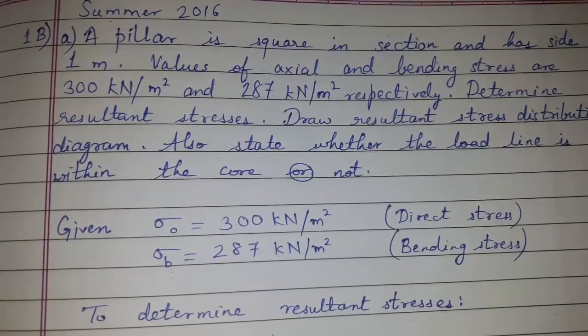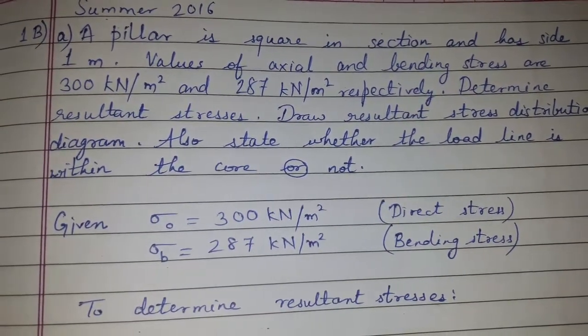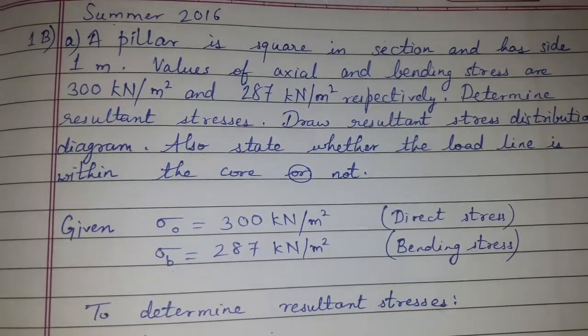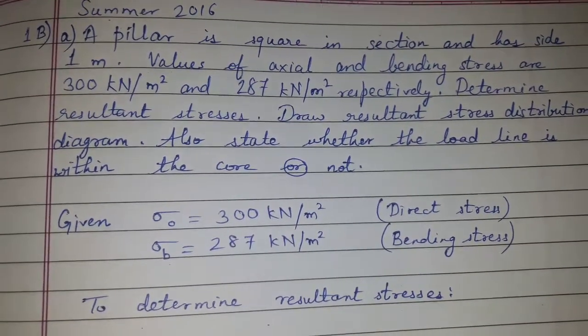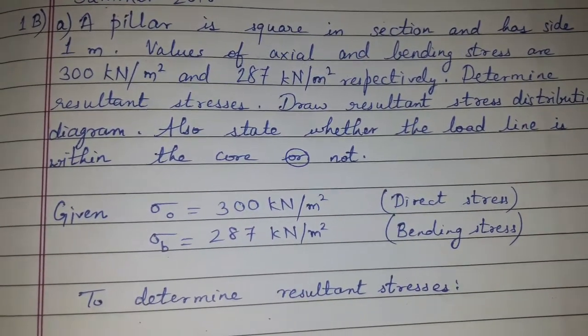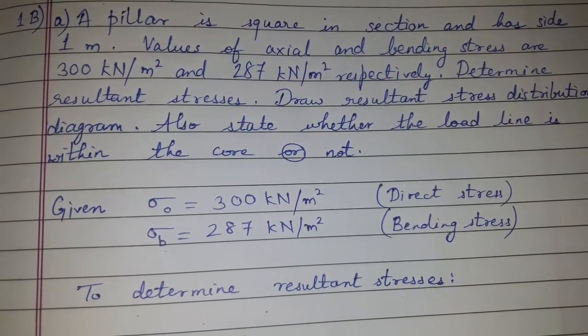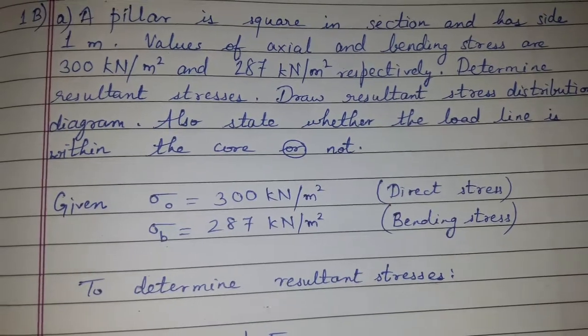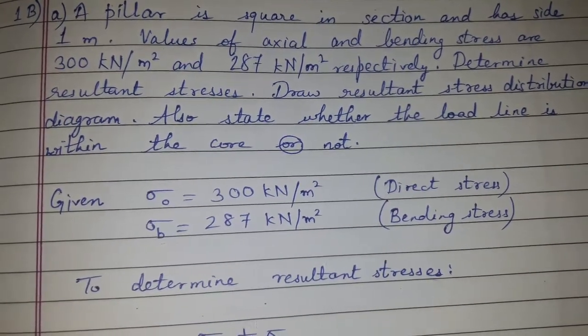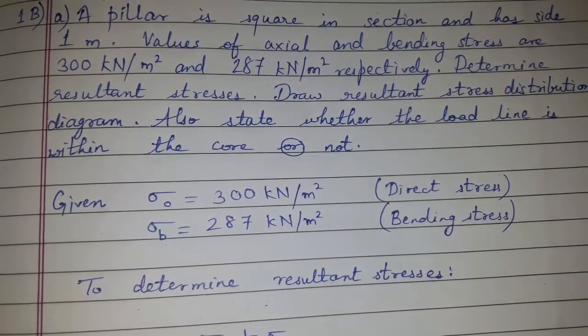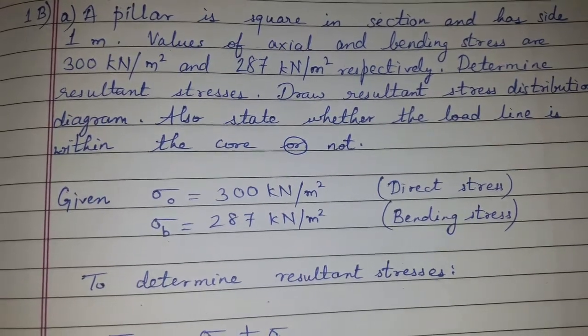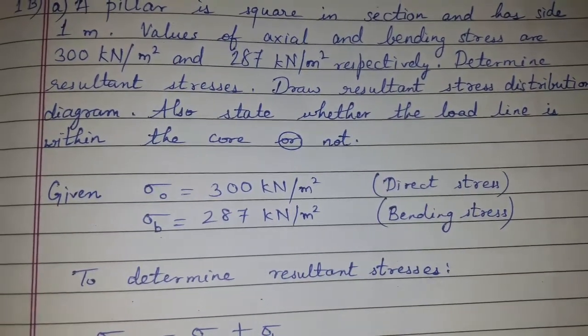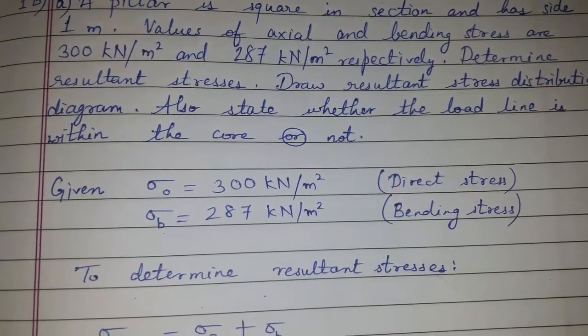A pillar is square in section and has side 1 meter. The value of axial and bending stresses are 300 kN per meter square and 287 kN per meter square respectively. Determine resultant stresses, draw resultant stress distribution diagram, also state whether the load line is within core or not.